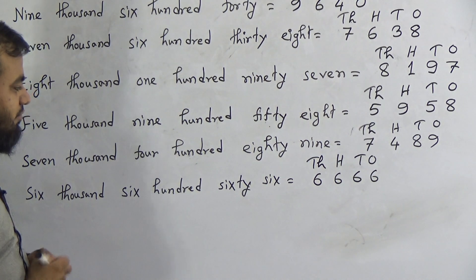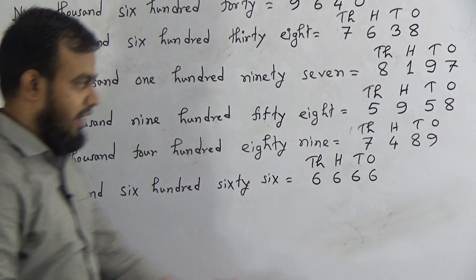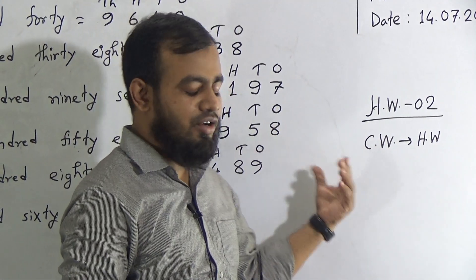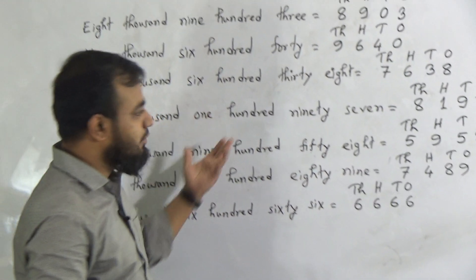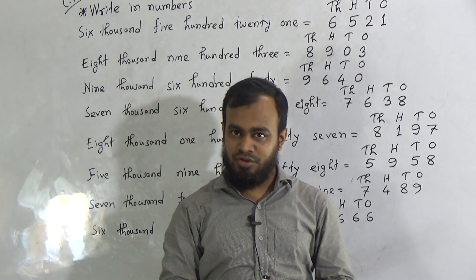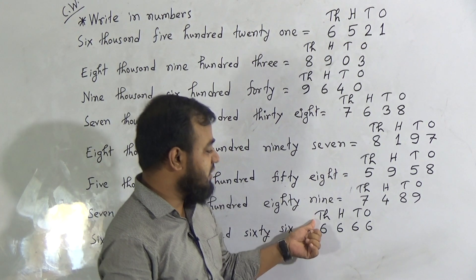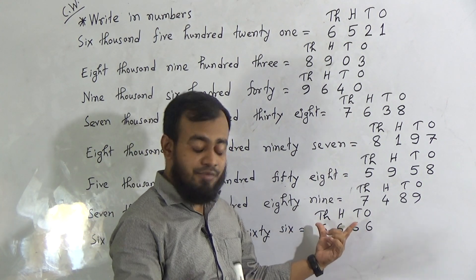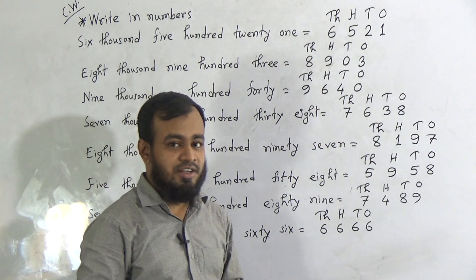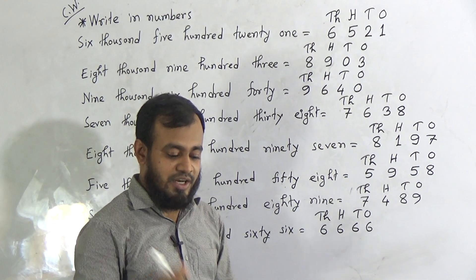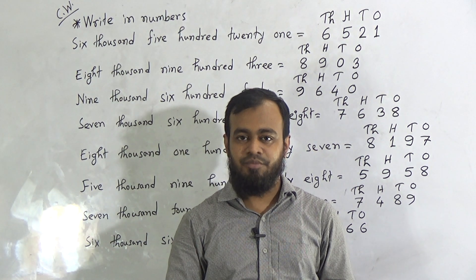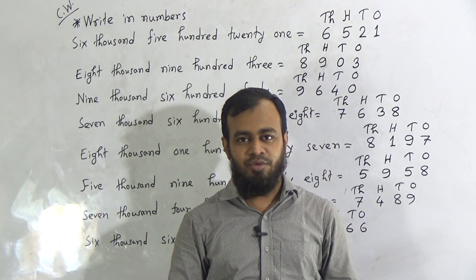I hope you have understood, dear students. This is your homework number two — the CW I wrote on the board is also your HW. Please keep practicing more and more at home. If you don't want to write down the place values (Thousands, Hundreds, Tens, Ones), it will still be correct, but writing the place values makes mistakes much less likely. Please submit your HW every Saturday from 9 AM to 3 PM. See you again, Inshallah, with a new class. Till then, Allah Hafiz.